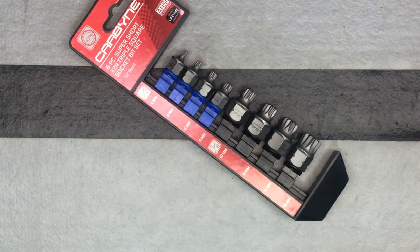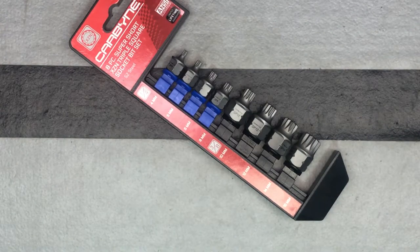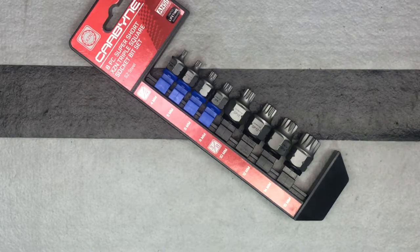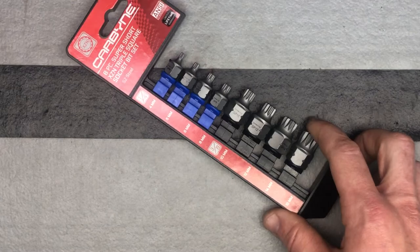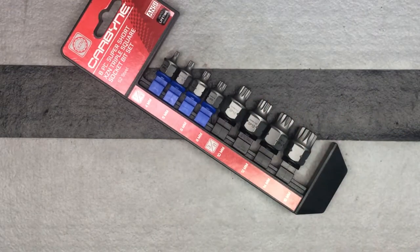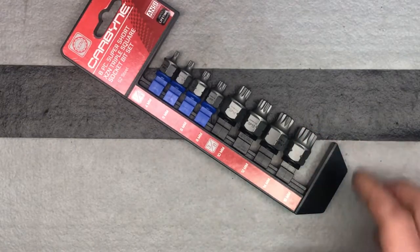Some of the places where you can run across these - I know are like cylinder head bolts, drivetrain components, that kind of stuff. Any place where they needed really high torque. So this triple square bit set is what you'll need to take those out.